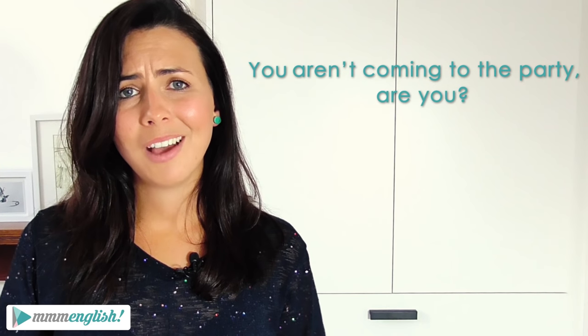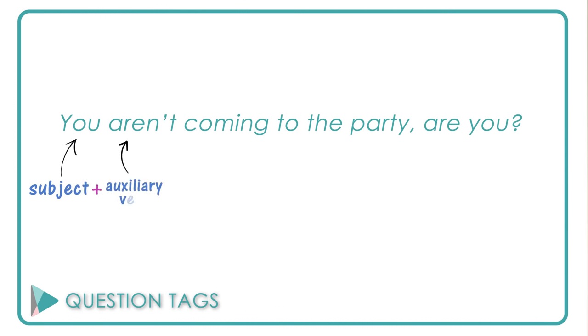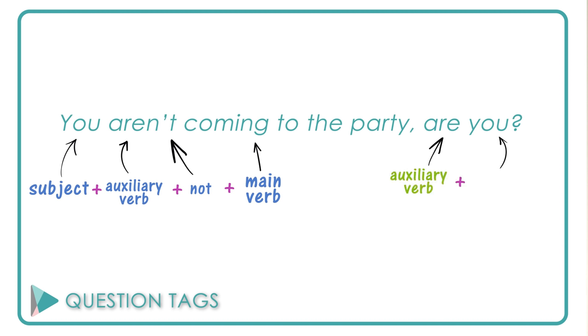You aren't coming to the party, are you? We have the subject, our auxiliary verb, the negative 'not', and our main verb. Then in the question tag, we have our auxiliary verb and our personal pronoun that matches the subject. So the statement and the question tag need to be opposites. If the statement is positive, then the question tag is negative. If the statement is negative, then the question tag is positive. So pay attention to the statement — you need to know if it's positive or negative in order to make your question tag correctly.